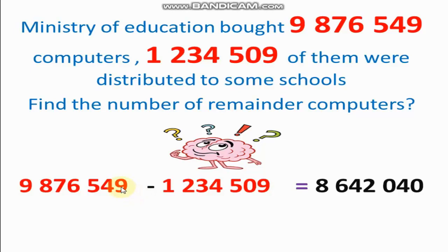At first, starting from units. 9 minus 9 equals 0. 4 minus 0 equals 4. 5 minus 5 equals 0. 6 minus 4 equals 2. 7 minus 3 equals 4. 8 minus 2 equals 6. Last digit, 9 minus 1 equals 8.